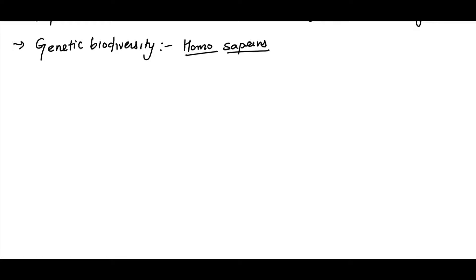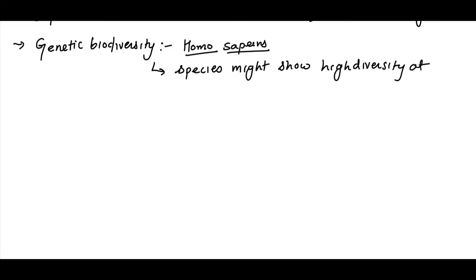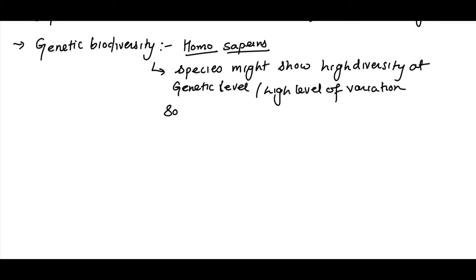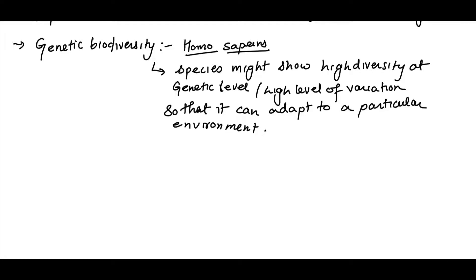Two organisms from the same species can also show a large number of variations, which means they might show high diversity at the genetic level — in easy terms, a high level of variation. Now, why do we talk about high level of variation? So that the particular organism can adapt to the environment.